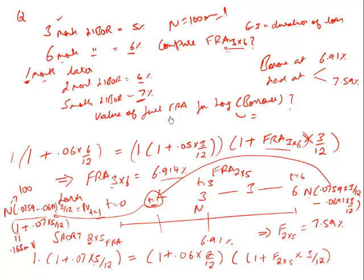The value of the FRA after one month to the long counterparty is +0.165 million dollars. If the question asks for the value to the short, it would simply be −0.165 million dollars. Remember: derivatives — fixed income or equity — are always a zero-sum game. The value to the short is exactly equal and opposite to the value to the long.